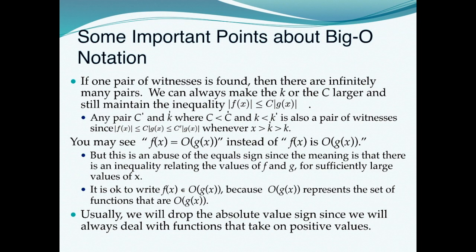There are a few important things to know. Once one pair of witnesses is found, there are infinitely many pairs that can satisfy the relationship when c or k are large enough. Any pair c′ and k′ where c < c′ and k < k′ also satisfies the relationship. Note that the Big O notation is not an equal sign — we use it casually because we are giving an estimate. For example, f(x) = x + 1 could be estimated to grow toward the behavior of f(x) = x².